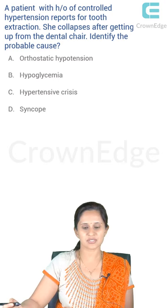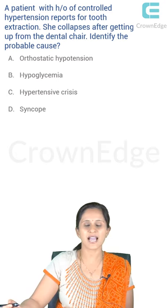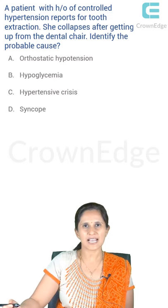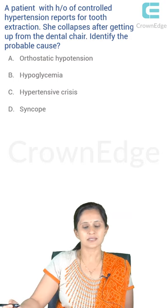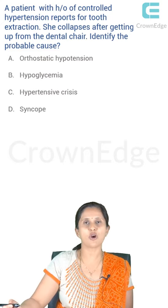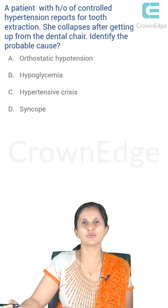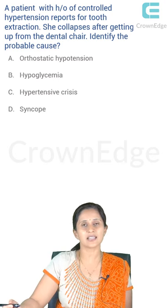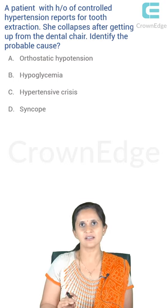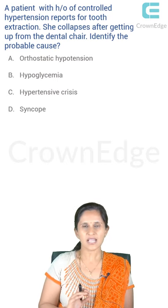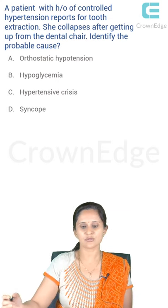A patient with a history of controlled hypertension reports for tooth extraction and collapses after getting up from the dental chair. Note that the patient is only hypertensive, not diabetic, so hypoglycemia is unlikely. Hypertensive crisis presents with headache, fever, and irritability. The most common cause, especially when a patient with hypertension suddenly stands up, is orthostatic hypotension — these patients have a tendency toward decreased blood supply to the brain when standing up suddenly. So the most probable answer is orthostatic hypotension.